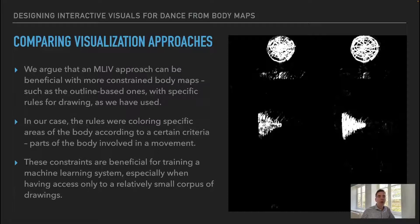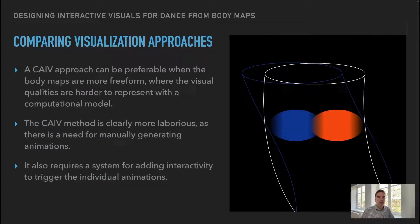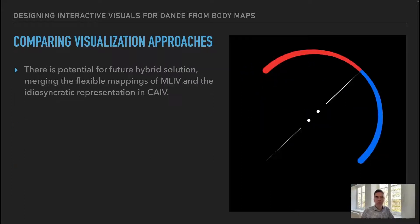Comparing visualization approaches: an MLIV approach can be beneficial with more constrained body maps, such as the outline-based ones with specific rules for drawing. In our case, the rules were coloring specific areas of the body according to a certain criteria — parts of the body involved in a movement. These constraints are beneficial for training a machine learning system, especially with only a relatively small corpus of drawings. A CAIV approach can be preferable when the body maps are more freeform, where the visual qualities are harder to represent with a computational model. The CAIV method is clearly more laborious, requiring manually generated animations and a system for adding interactivity. There is potential for a future hybrid solution merging the flexible mappings of MLIV and the idiosyncratic representation in CAIV.